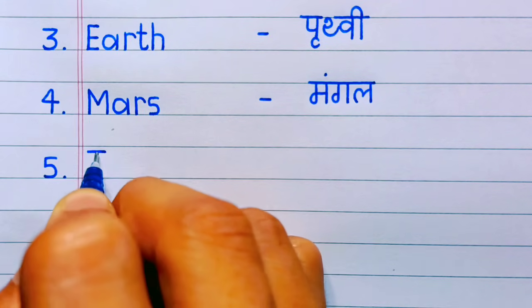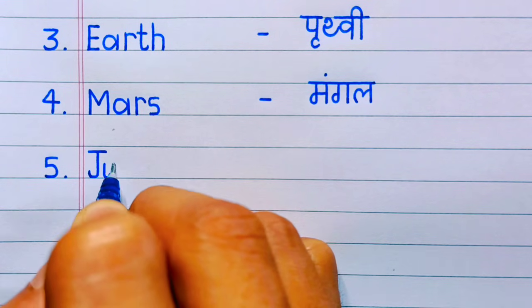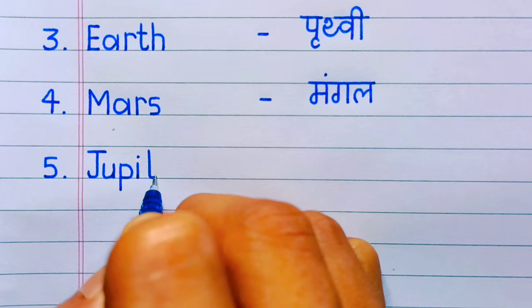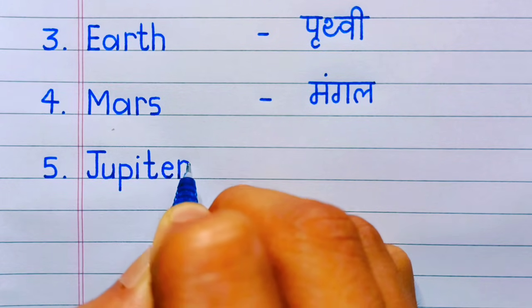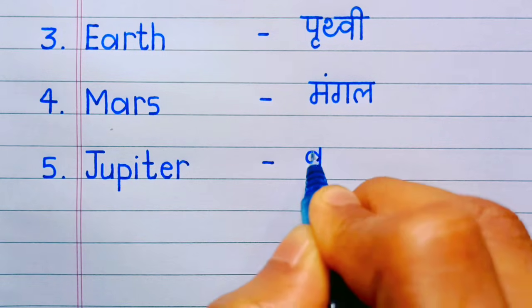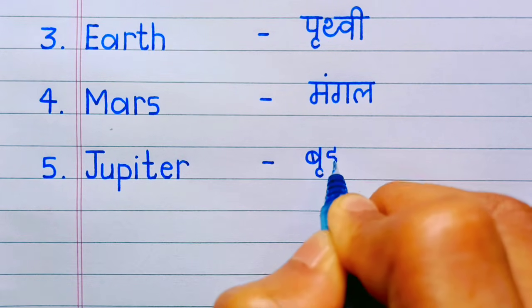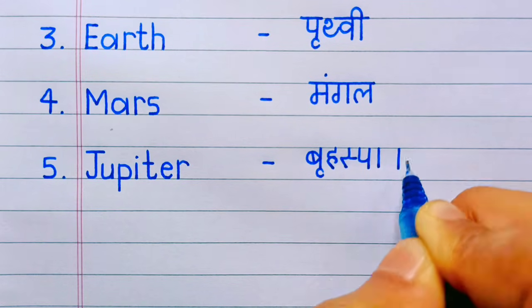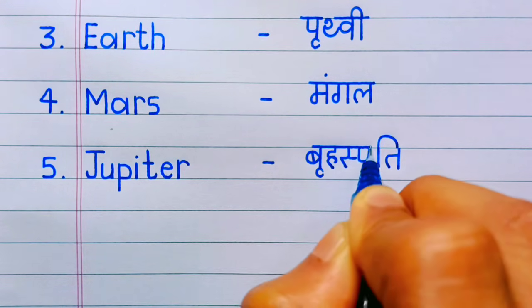Number five: Jupiter. J-U-P-I-T-E-R, Jupiter. Jupiter means Brhaspati.